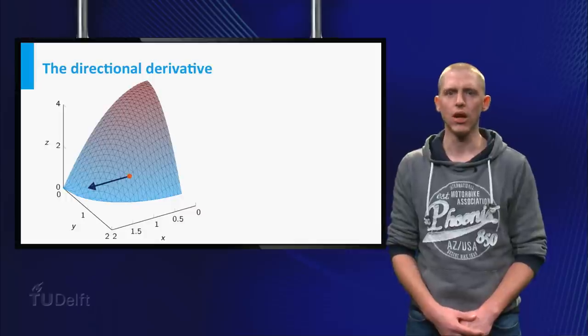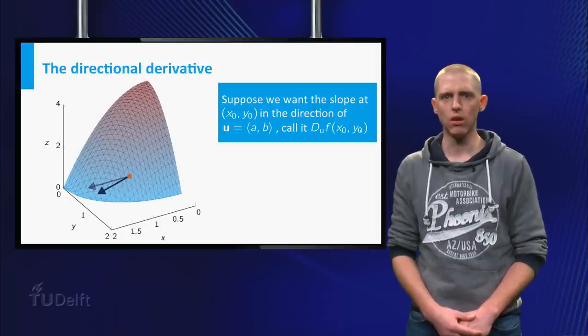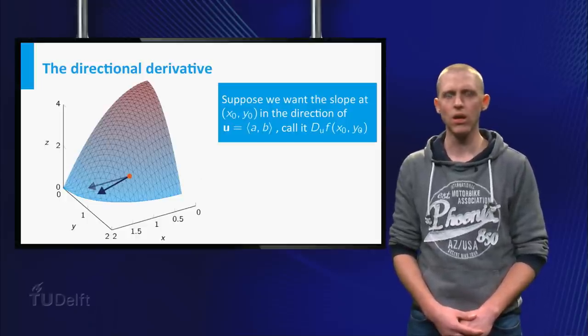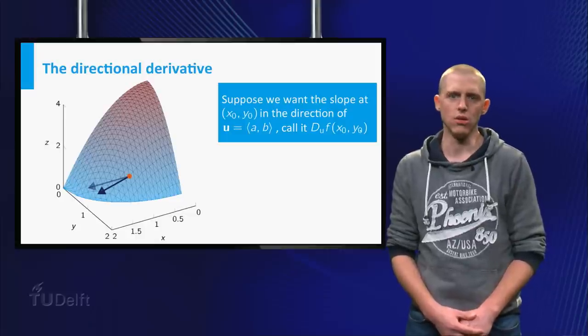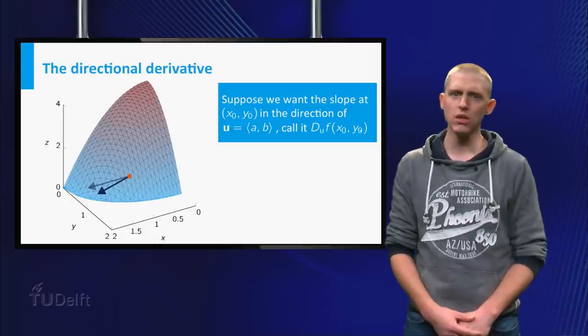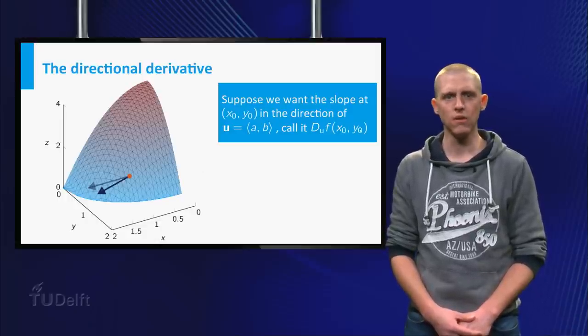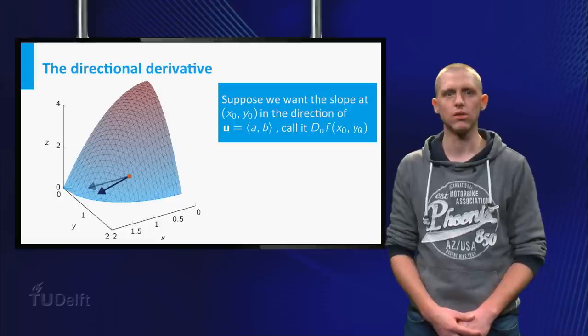What would happen if you instead look at another direction? Consider the slope at the point x0, y0 of a function f of x and y in a different direction, say u is ab, with u a unit vector and give this slope the name duf, the directional derivative of f at x0, y0 in the direction of u.